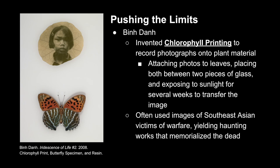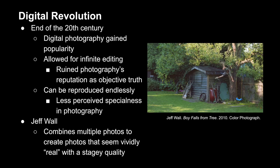Photographer Binh Danh created his own form of printing photos, which he calls chlorophyll printing. In this process, he's able to print photographic materials onto plant matter — attaching photos to leaves, placing both between two pieces of glass, and exposing them to sunlight for several weeks. The process of photosynthesis transfers the image onto the leaf. Coming from a family of Vietnamese immigrants, his work often uses imagery of Southeast Asian victims of warfare, producing haunting works that memorialize the dead.